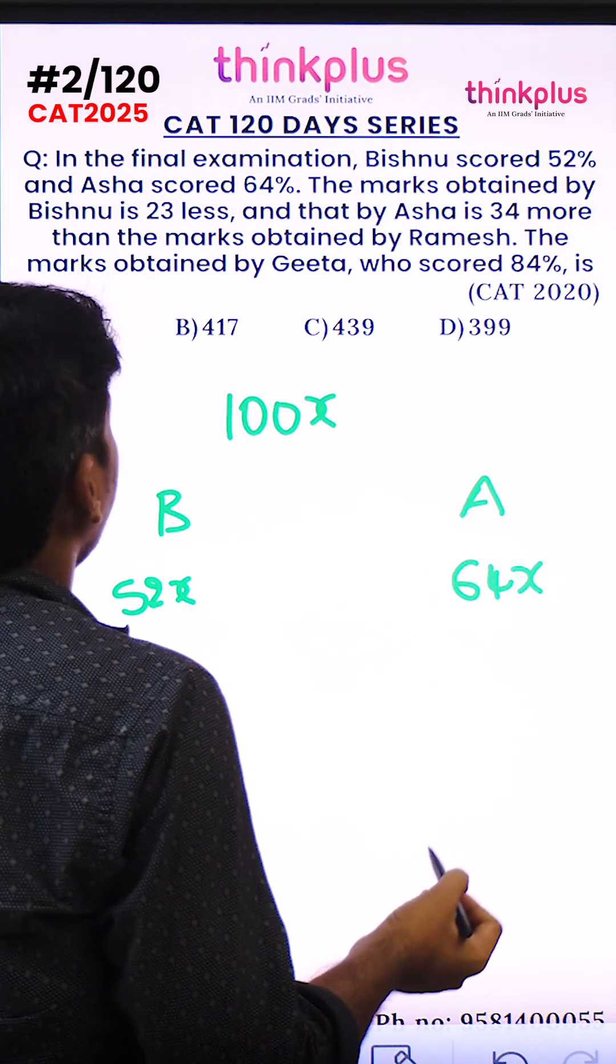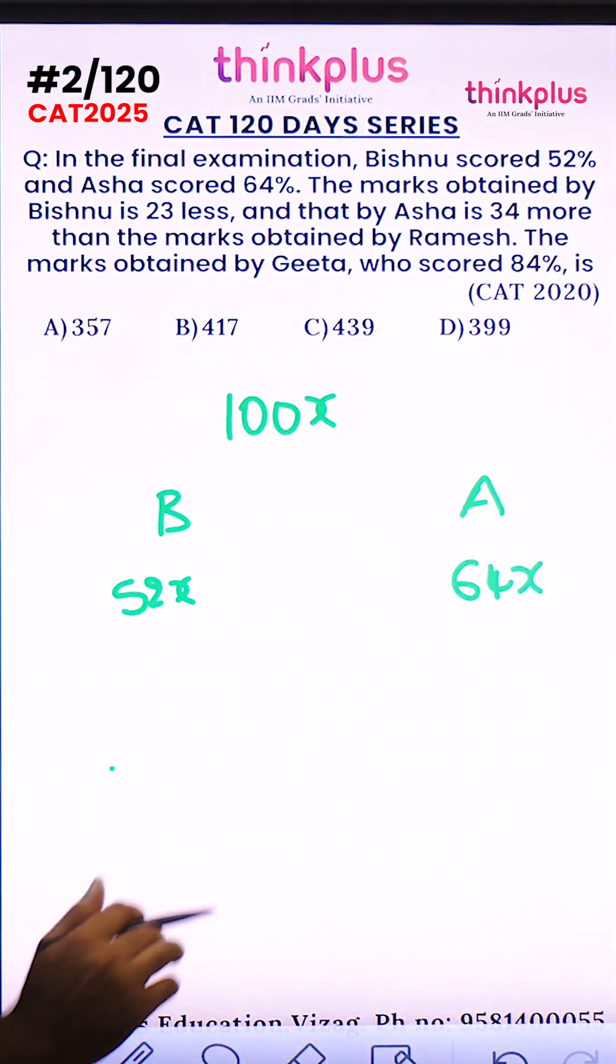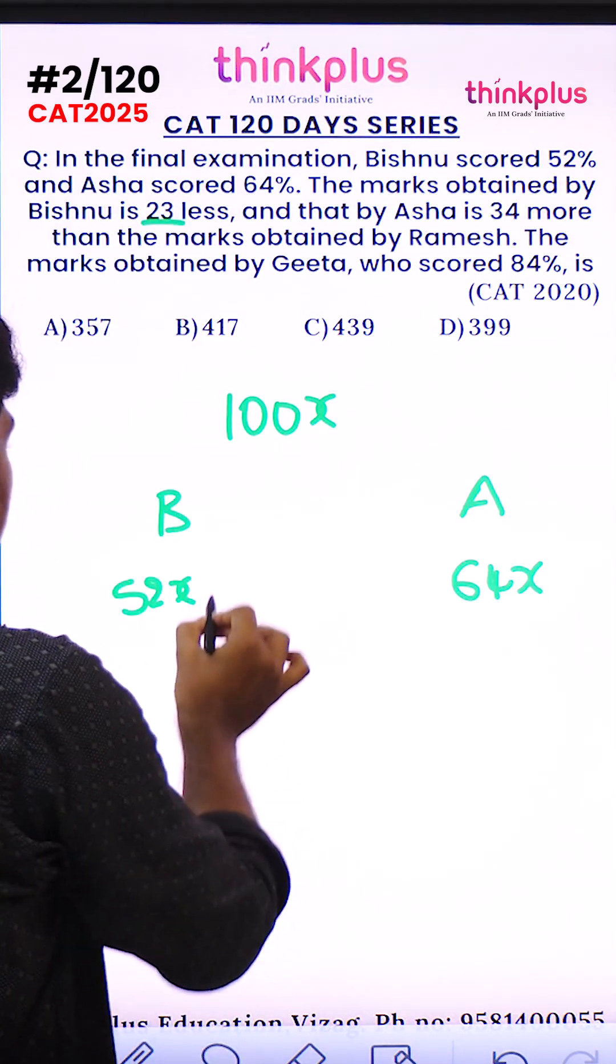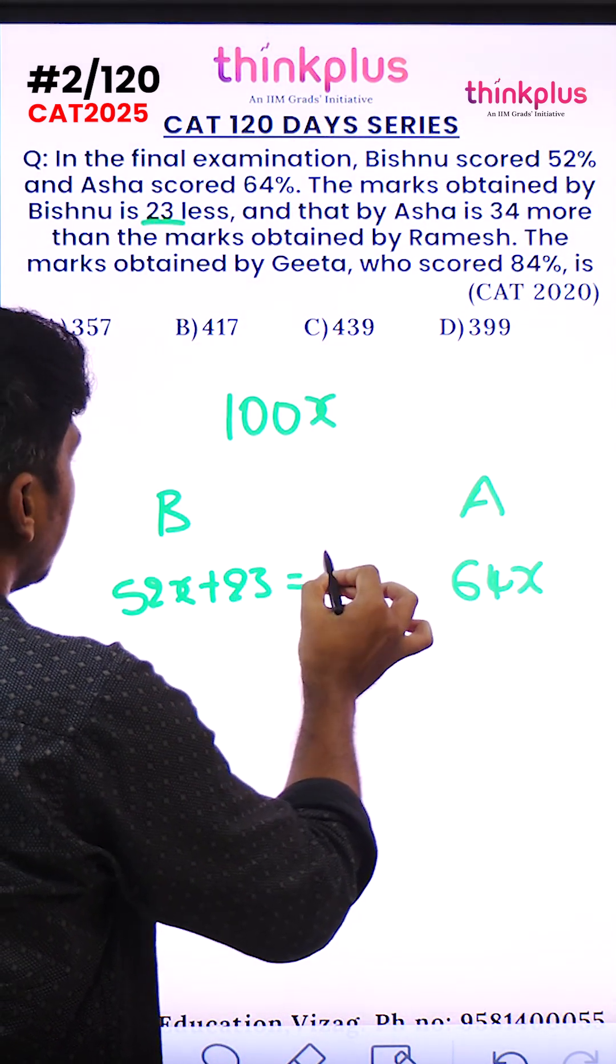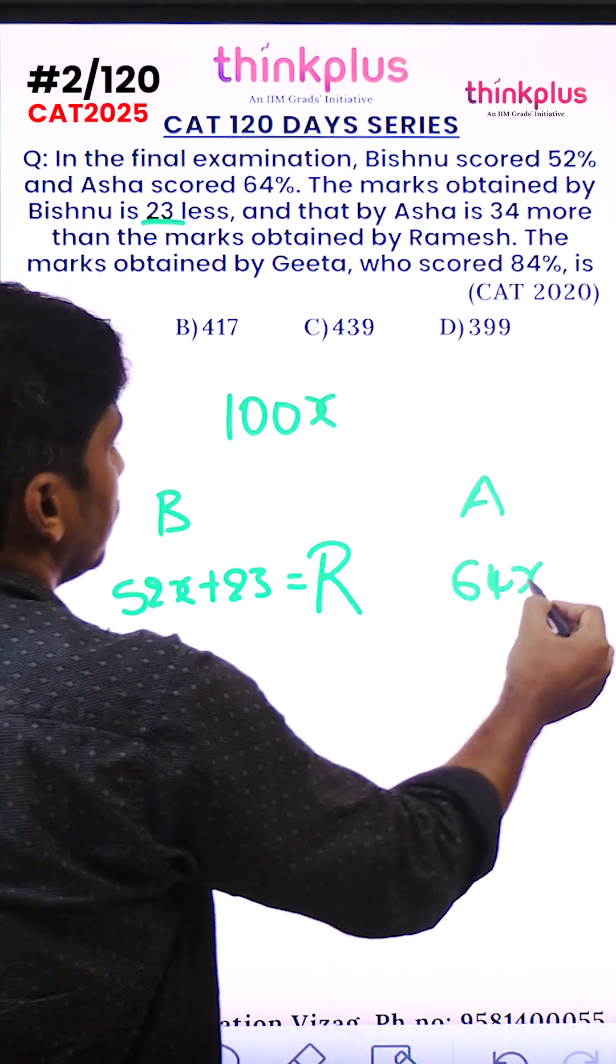The marks obtained by B is 23 less than Ramesh's marks, and that by A is 34 more than Ramesh's marks. So comparing with B and A, if we add 23 to B's marks or subtract 34 from A's marks, we get Ramesh's marks, which must be equal.